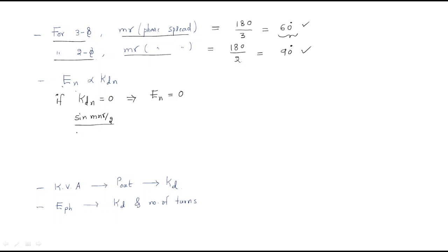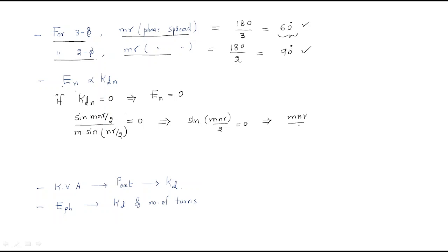The formula for kdn is: sin(m·n·γ/2) divided by m·sin(n·γ/2), set equal to zero. From this we write sin(m·n·γ/2) equals zero, which means m·n·γ/2 equals 180 degrees.